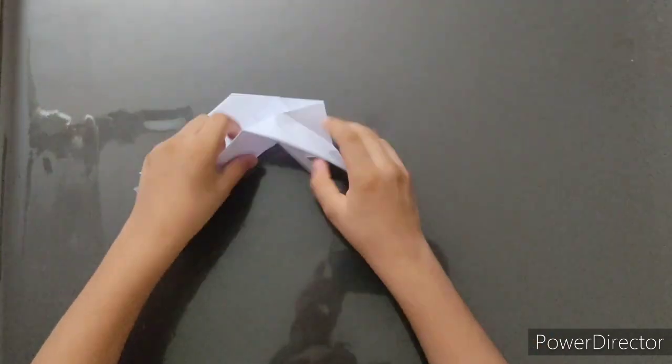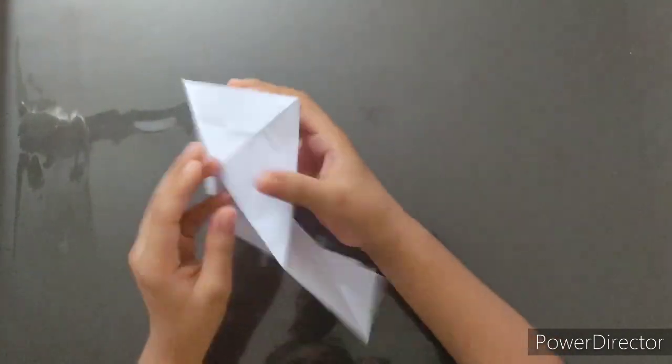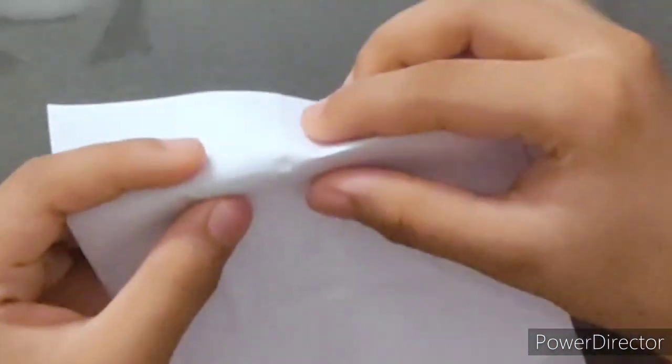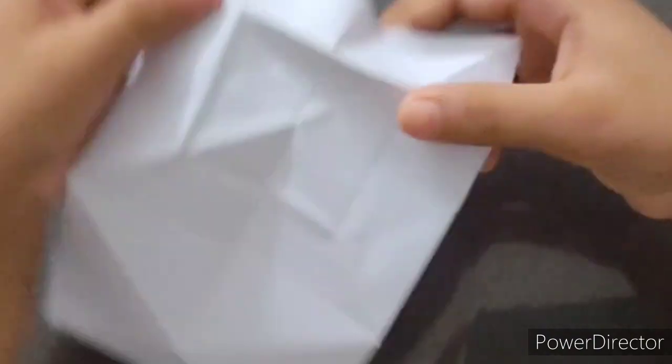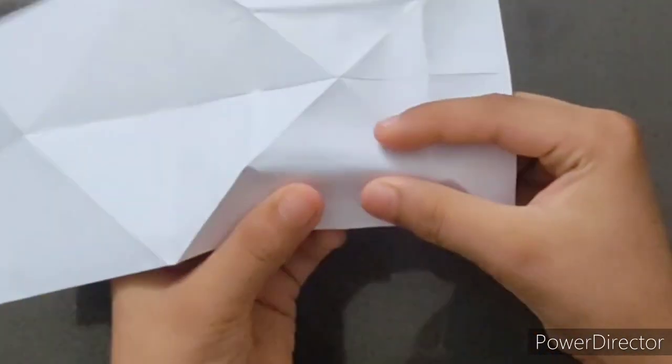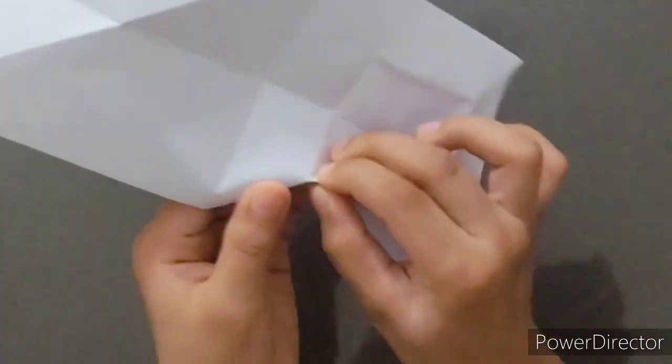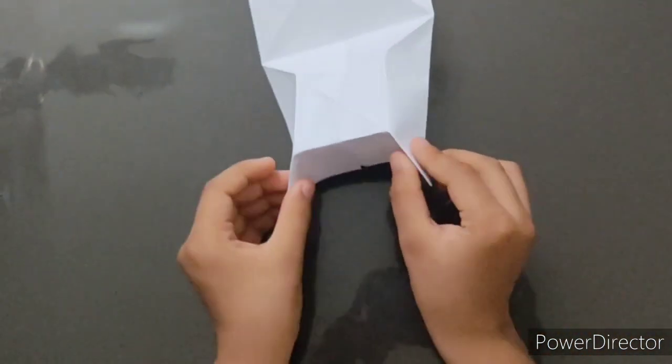Open and bring it back to the same point. Now, just fold these creases a little bit to make it visible. You can even fold the corners.